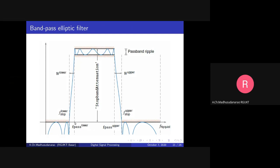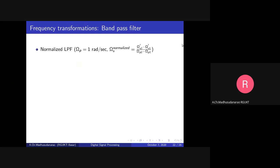You can see that between FP1 and FP2, the gain is always above Delta P — Delta P is the minimum allowed gain. In the stopband, the gain is always less than or equal to Delta S. This is the first stopband and this is the second stopband.